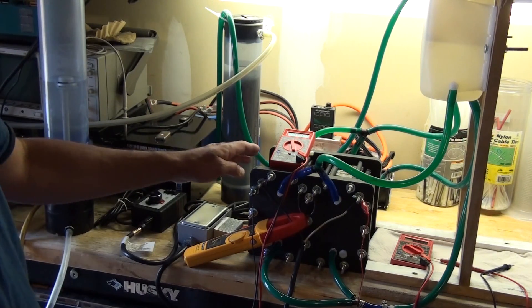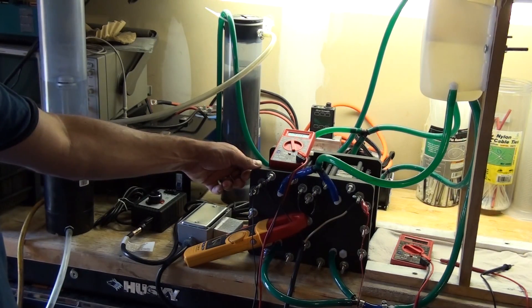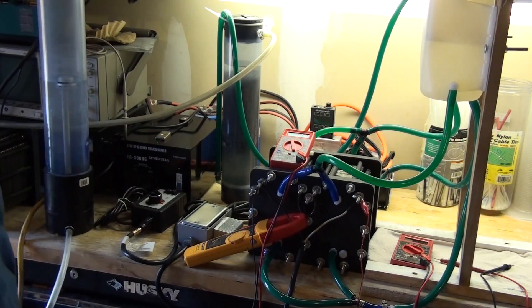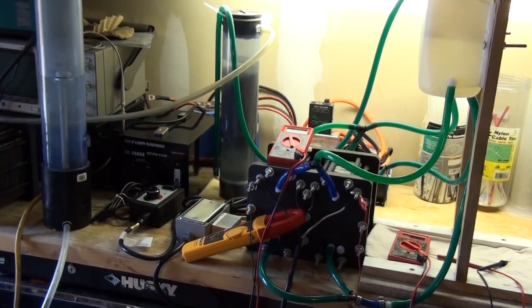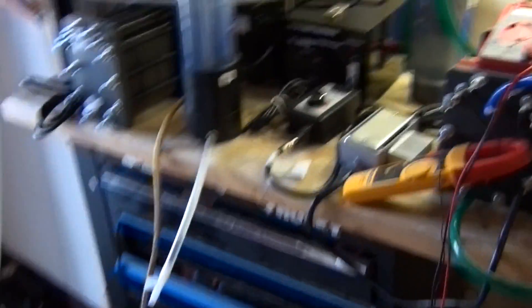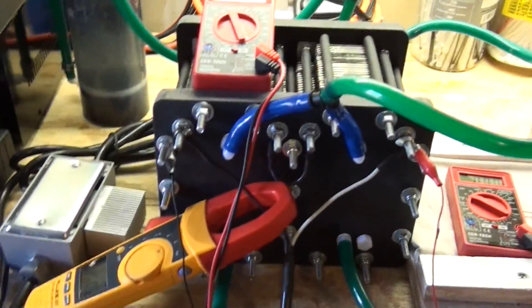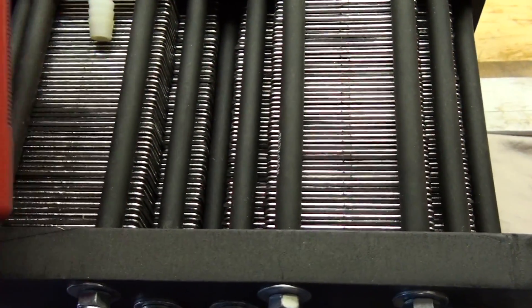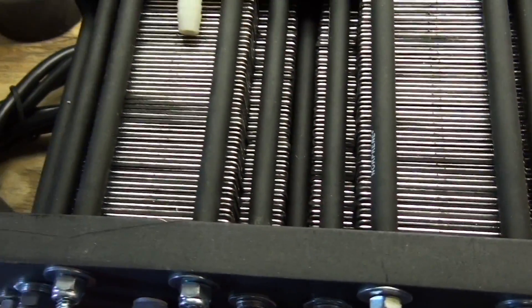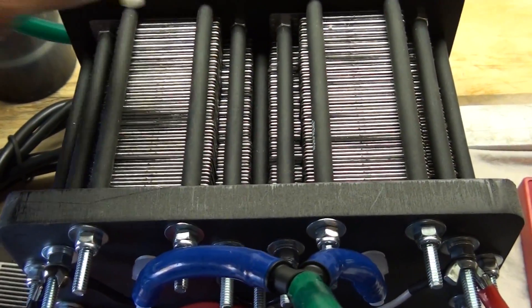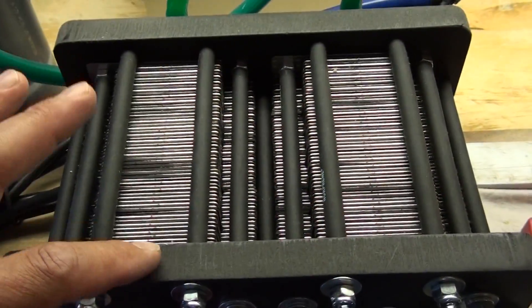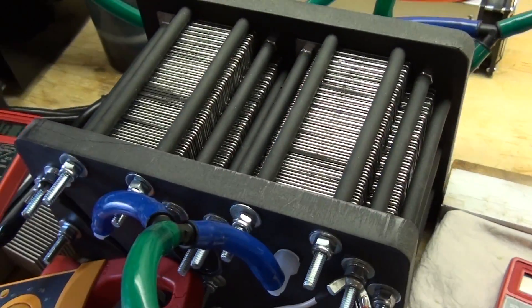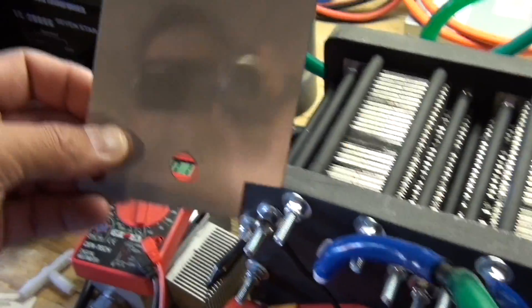This HHO generator is capable of running at 220 volts AC input. Let me show you. So we've got two sets of cells, 159 plate stack here and 159 plate stack here. This cell uses 316 stainless steel.